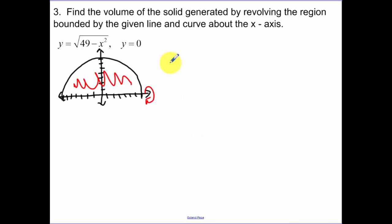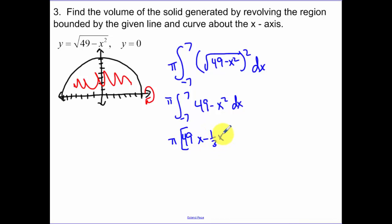So I wonder what happens when I revolve a semicircle around the x-axis. Let's look. So we have pi from negative 7 to 7 of our function squared dx. So we have the square root of 49 minus x squared.